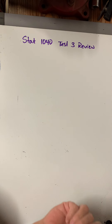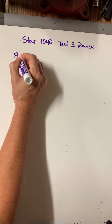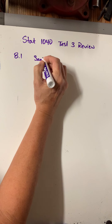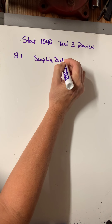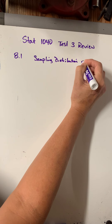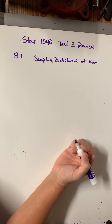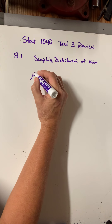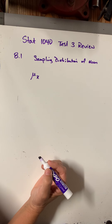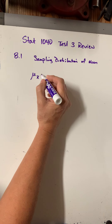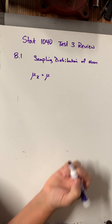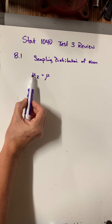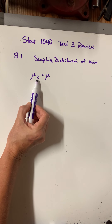This test is only for Chapters 8 and 9. In 8.1, we had what's called a sampling distribution of the mean. It gave us two formulas. The first was the mean of the sampling distribution of the mean, which just gave us mu. This is on your formula sheet, but pay attention to what these symbols are — mu represents the mean of the population.